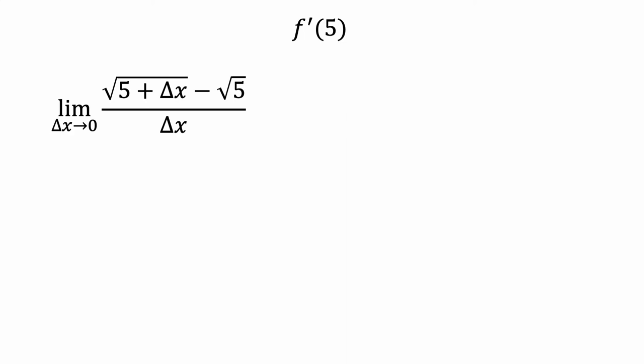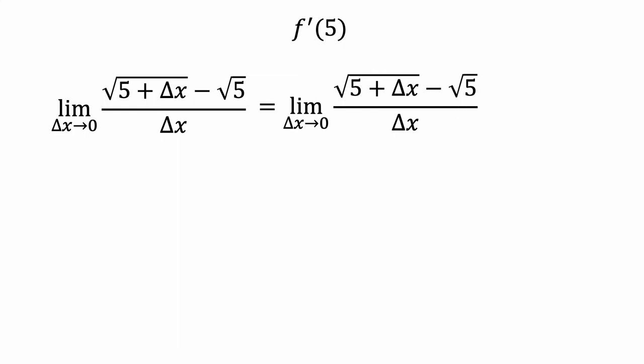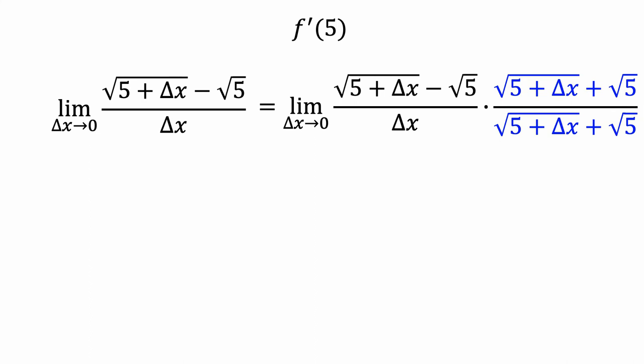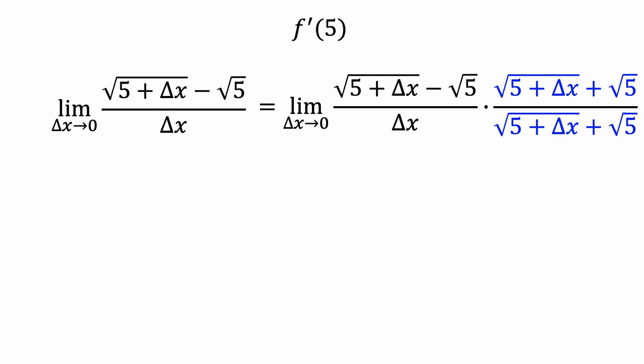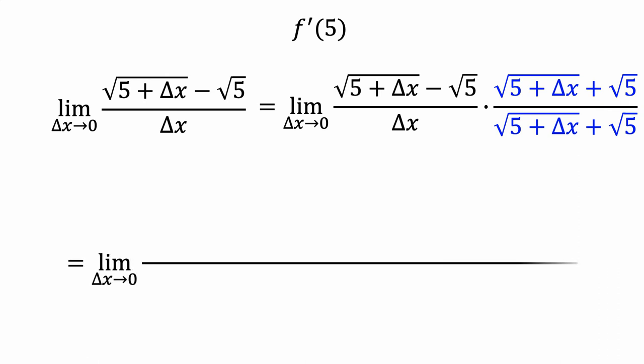The challenge with evaluating this limit is dealing with the square root expression. A strategy for accomplishing this is to multiply the numerator and denominator by something called the conjugate of the numerator. In this case, the conjugate of the numerator is the square root of 5 plus delta x plus the square root of 5. What makes it the conjugate is that we're adding root 5 instead of subtracting it. Of course, if we multiply both the numerator and the denominator by the conjugate, then we're really multiplying by something equivalent to 1, so it won't change the fraction.